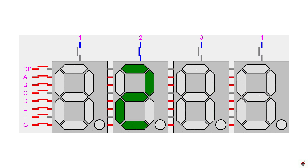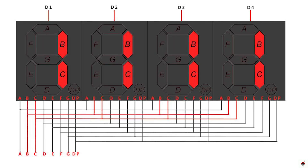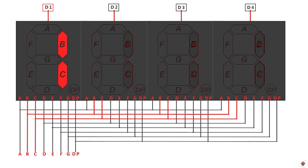For example, to print the number 1 we make segments B and C high and other segments low. With this combination we get a 1, but it will be printed on all four digits. To print it only on the first digit, we activate D1 and deactivate the other digits using D2, D3, and D4.